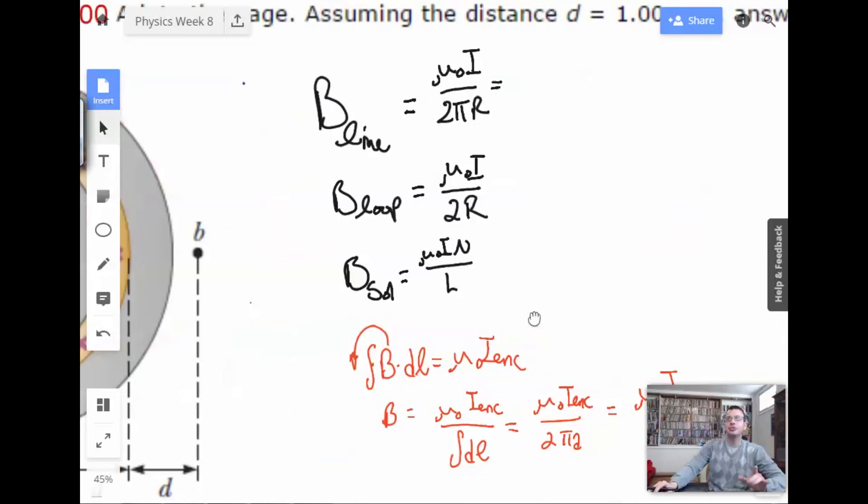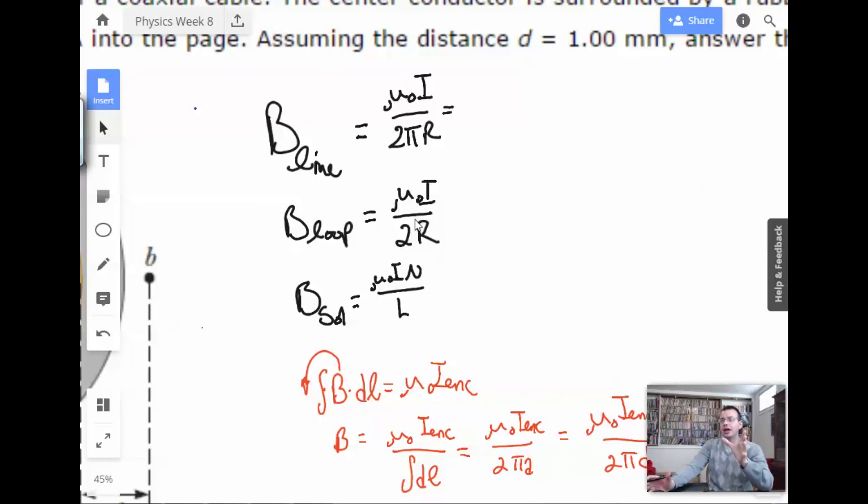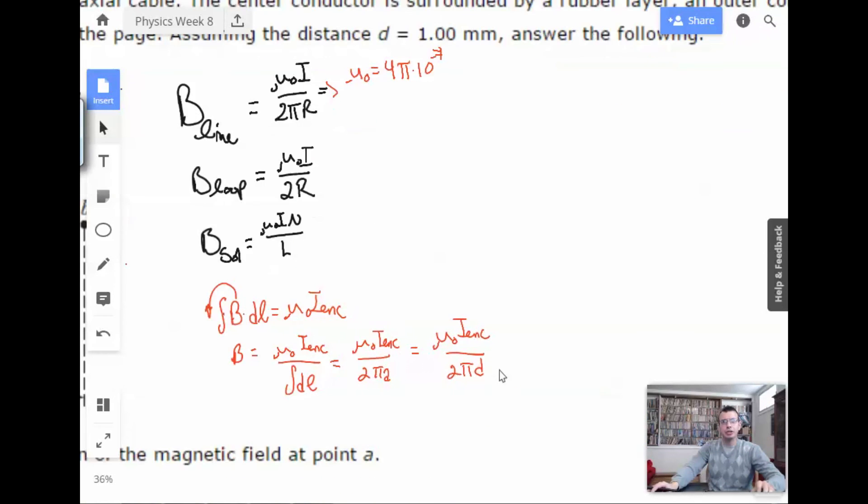I didn't mention this before. For lines, I usually think there shouldn't be any π involved because π is for round, circular things. Well, there's not really any π in this equation because μ₀ is 4π times 10⁻⁷. So what happens is this π on the bottom ends up getting canceled out.